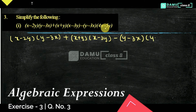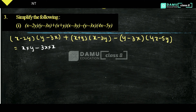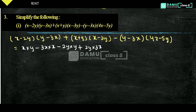So we are going to write this as x minus 2y into y minus 3x plus x plus y into x minus 3y minus of y minus 3x into 4x minus y. Let's multiply with the different expressions. So x into y, x into y minus 3x, then minus 2y into y, and minus into minus will become plus 2y into 3x.